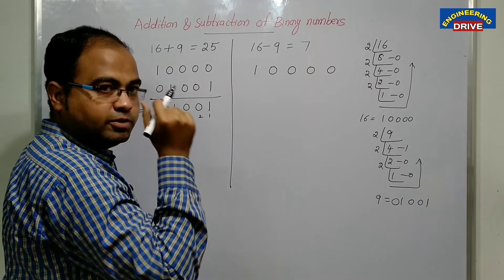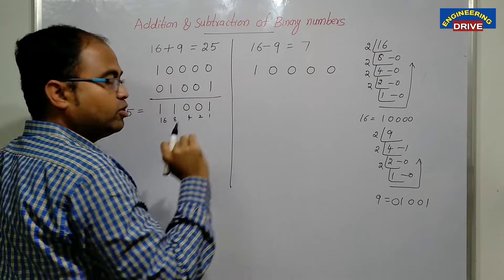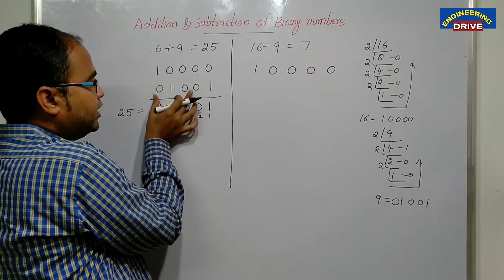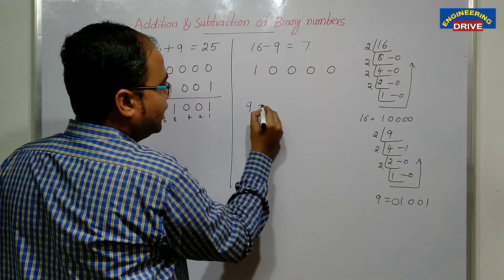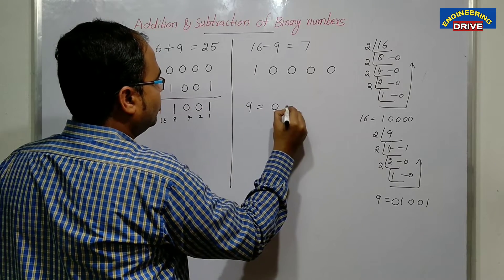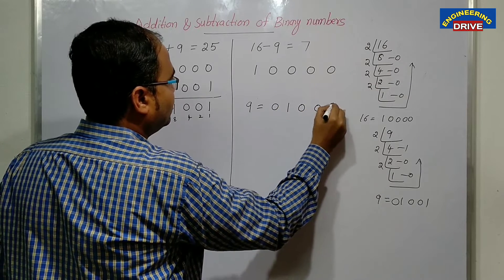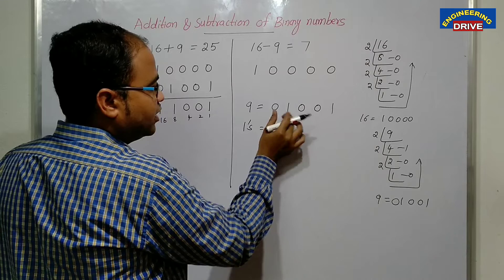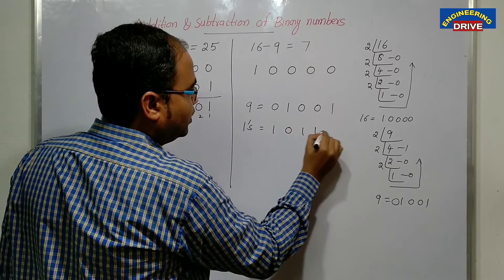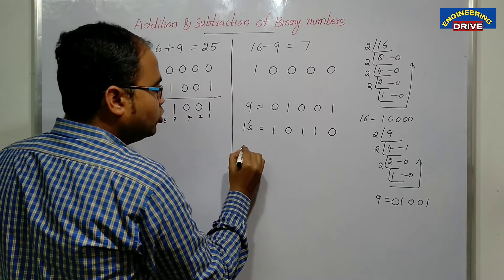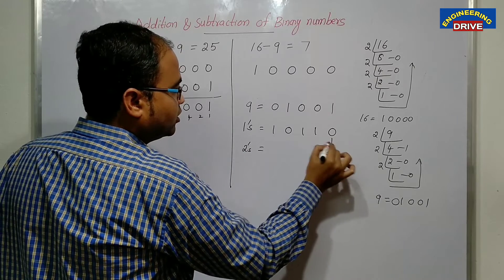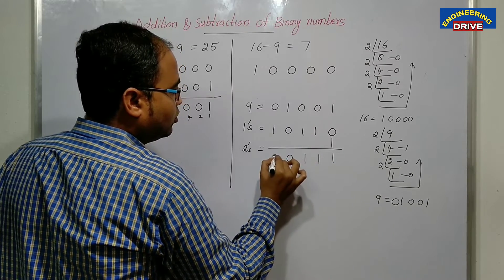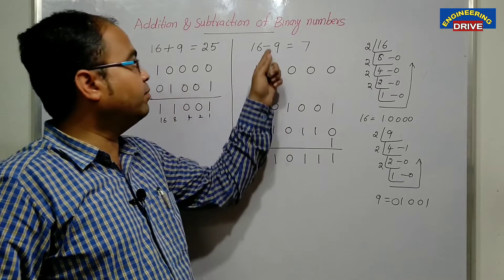How to find out 2's complement is already discussed in my previous videos. The binary form of 9 is 0 1 0 0 1. Find out the 1's complement: 1 0 1 1 0. Now find the 2's complement by adding 1 to the 1's complement result: 1 0 1 1 0 plus 1 equals 1 0 1 1 1. So we got the 2's complement of the binary number 9.